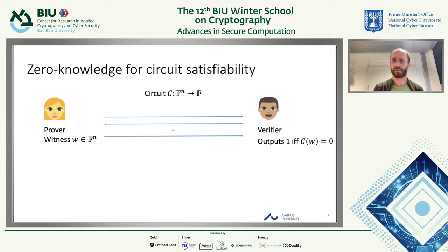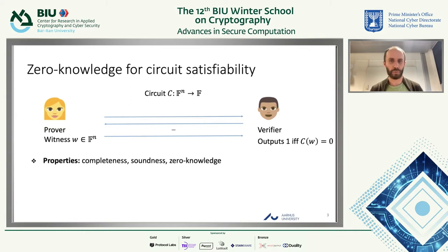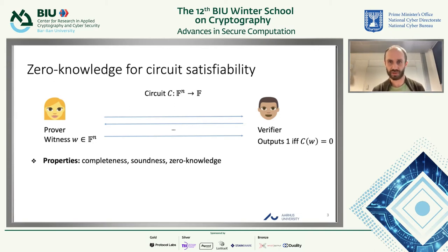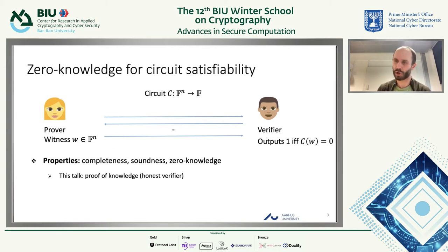We have some arithmetic circuit defined over a finite field, which consists of addition and multiplication gates, and the prover knows some witness w such that the circuit evaluates to zero on input w. The prover and verifier will run some possibly interactive protocol where at the end the verifier should be convinced this statement is true. The usual properties we want are completeness, soundness, and zero knowledge — the verifier learns nothing about the witness beyond the fact that the statement is true. All the protocols I'll discuss are also proofs of knowledge, meaning we can extract the witness w in a simulation.